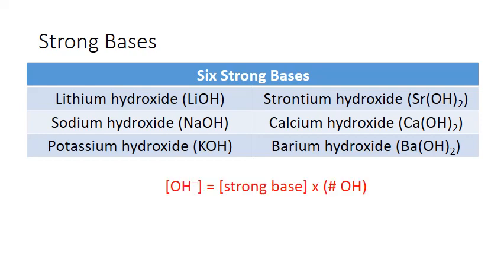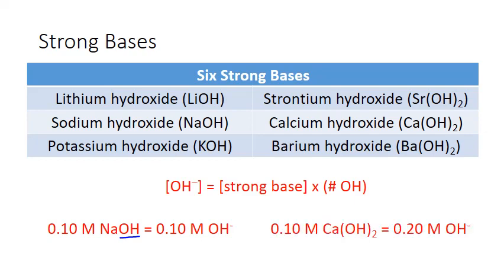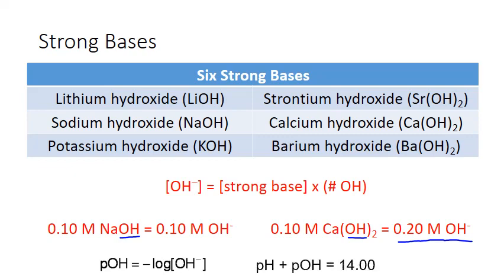For example, a 0.1 molar solution of sodium hydroxide contains 0.1 molar hydroxide ion when it dissolves, because there's only one OH unit in that formula. For calcium hydroxide, however, we have two units of OH. So if we have a 0.1 molar solution of calcium hydroxide, when it dissolves, it actually produces 0.2 molar hydroxide ions. If we know the hydroxide concentration in solution, we can calculate pOH, and from pOH we can also calculate pH from its relationship with pOH.